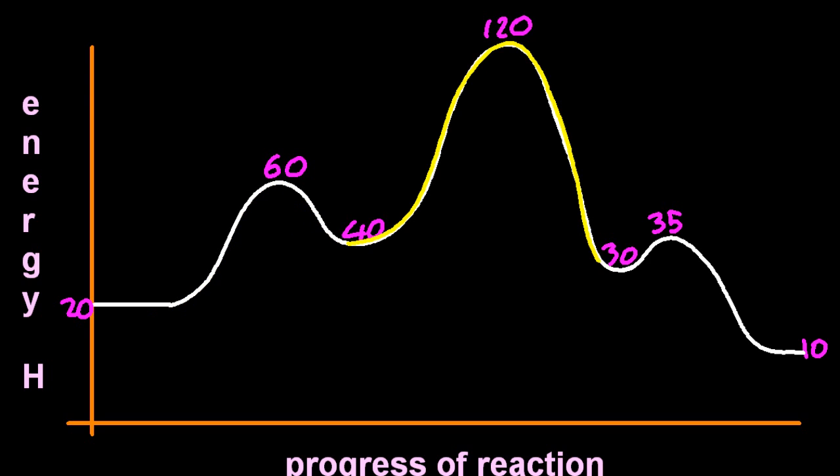Okay so there's three peaks, three steps in our mechanism, one, two and three. The first one, the products have a higher energy than the reactants and so that's going to be endothermic. The second one, the products have a lower energy than those reactants. And so that's going to be exothermic, releasing energy. And the final one, the products have a low energy. And again, exothermic, energy is released.